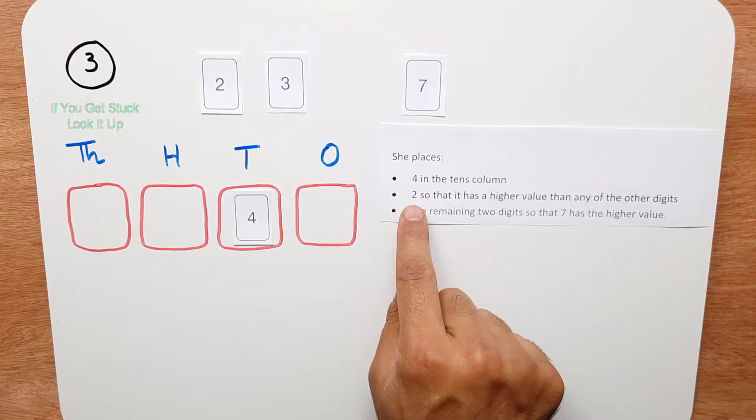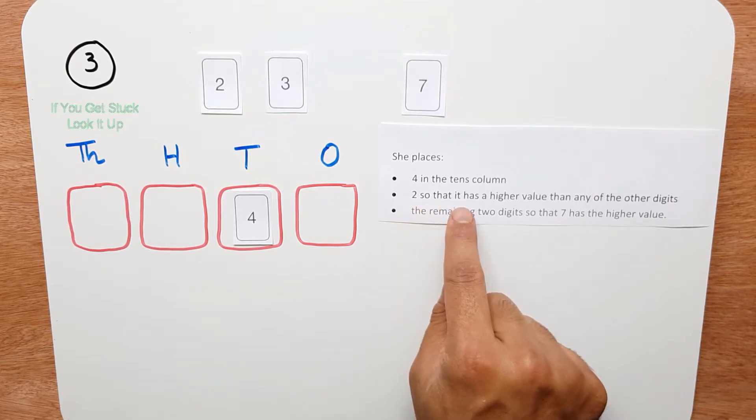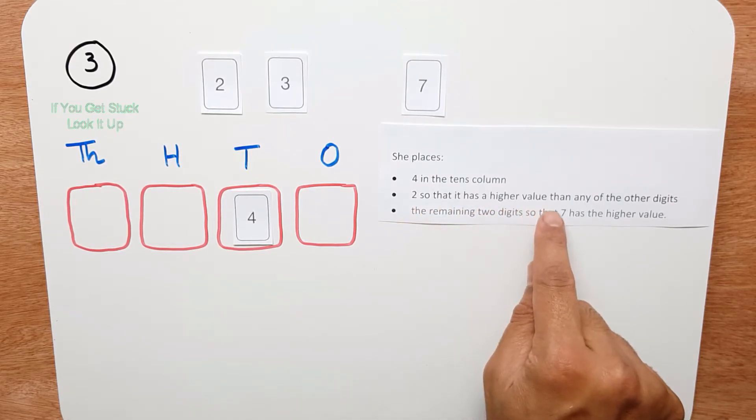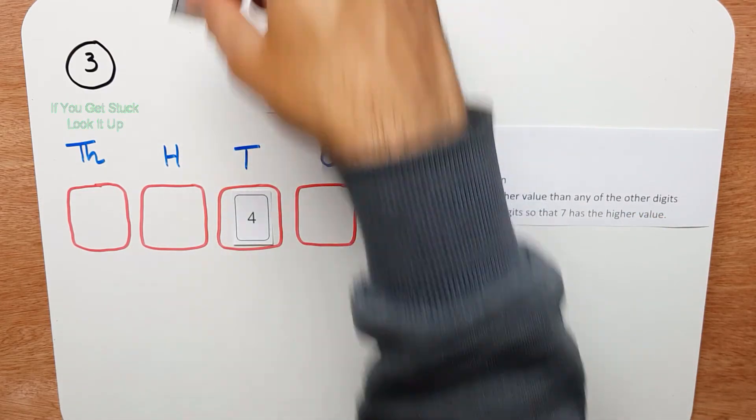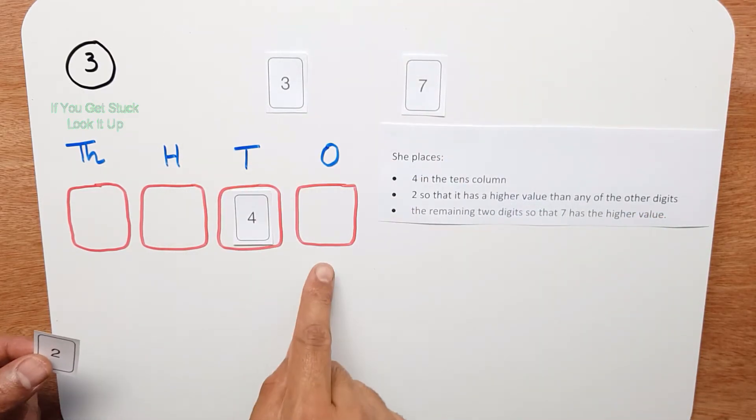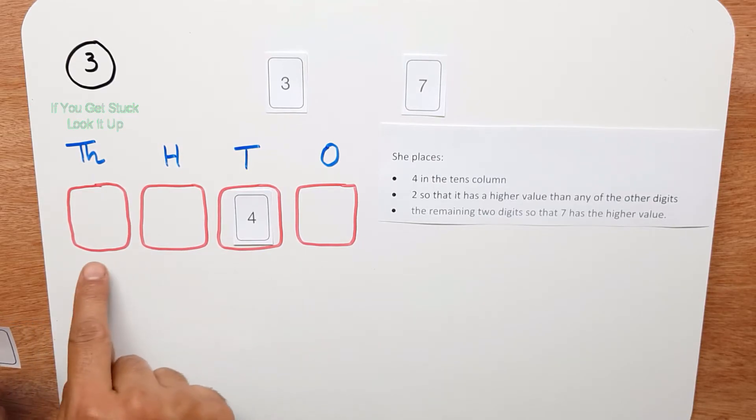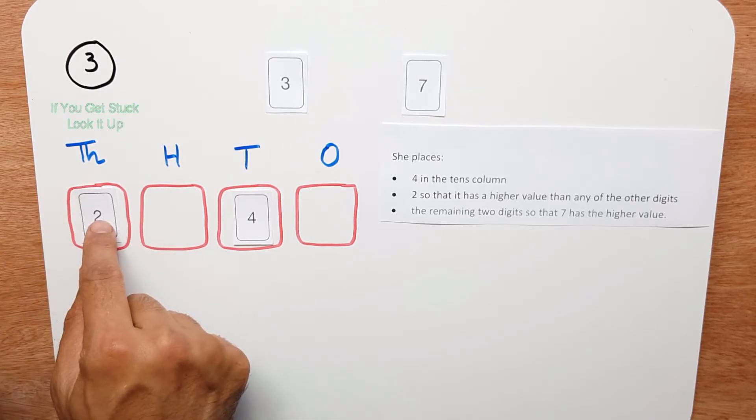We have to place the 2 so it has the higher value than any of the other digits. This 2 has to go into the column with the highest value, and we said the thousands column has the highest value, so that goes there.